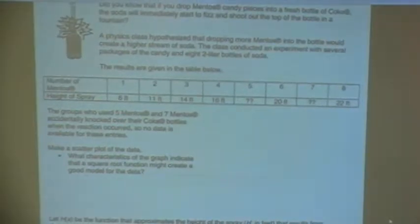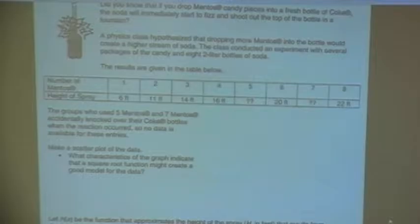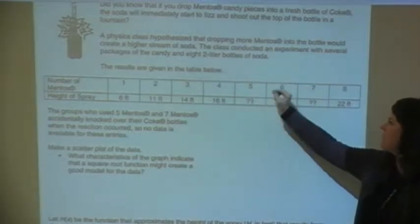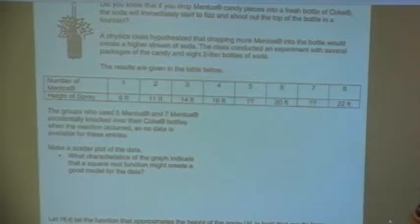So here's the result that they've given in the table below. The group who used five and seven Mentos accidentally knocked over their Coke bottles when the reaction occurred, so they don't have any data. They couldn't measure because the bottles were on the ground. So we don't have any data for five and seven, but we have all the other data.